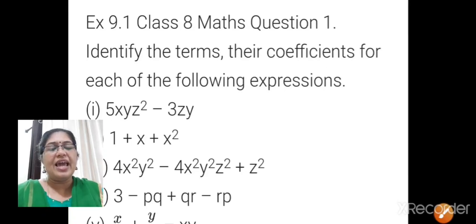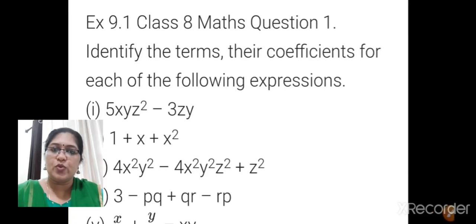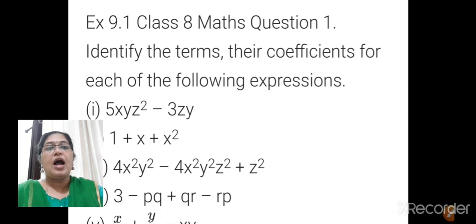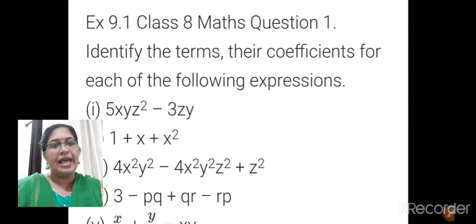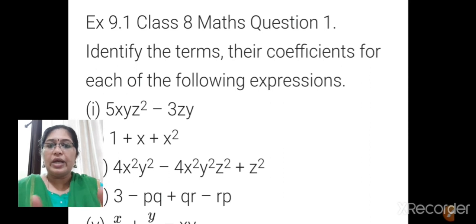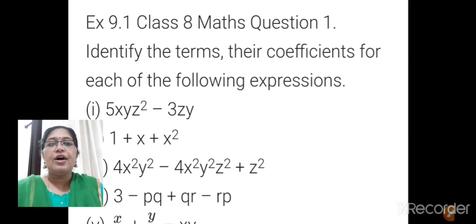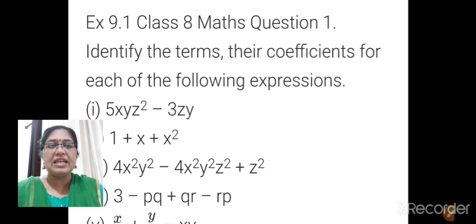Children, now let us see exercise 9.1, first question. Identify the terms and their coefficients for each of the following expressions. So in this first question, that is 5xyz squared minus 3zy.